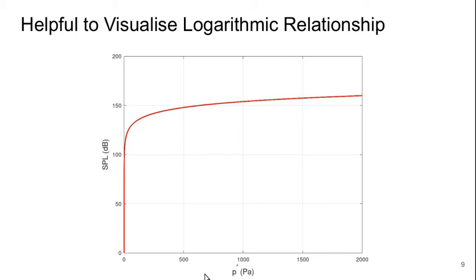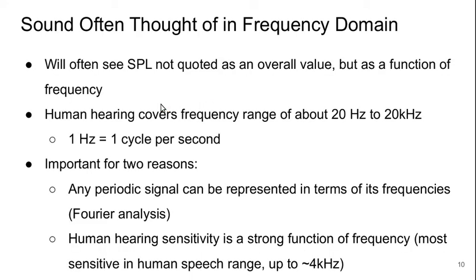Note that these are very large values of P' on the upper end, and that P' on the order of a few Pascals is more common. Sound pressure levels of around 80 to 130 decibels correspond to loud noises in our everyday experience. We often think of sound in the frequency domain instead of the time domain, so SPL is often quoted not as an overall value but as a function of frequency, or integrated over a particular range of frequencies.